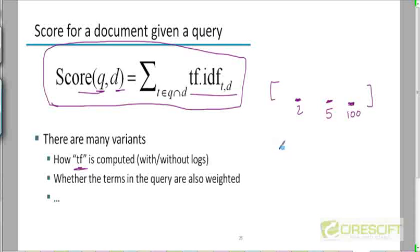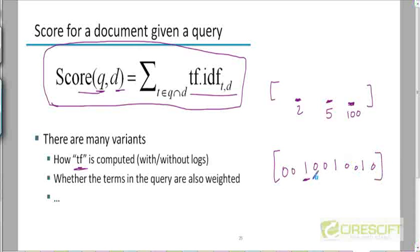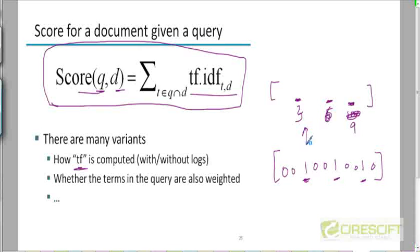Here's another way to look at it. Represent the query as having 1s for all the terms that are in the query and 0s for the rest. So this vector has a 1 at position 3 for 'capital,' position 6, and position 9. Represent each document as a vector of TF-IDF weights, and then take the dot product of these two vectors.